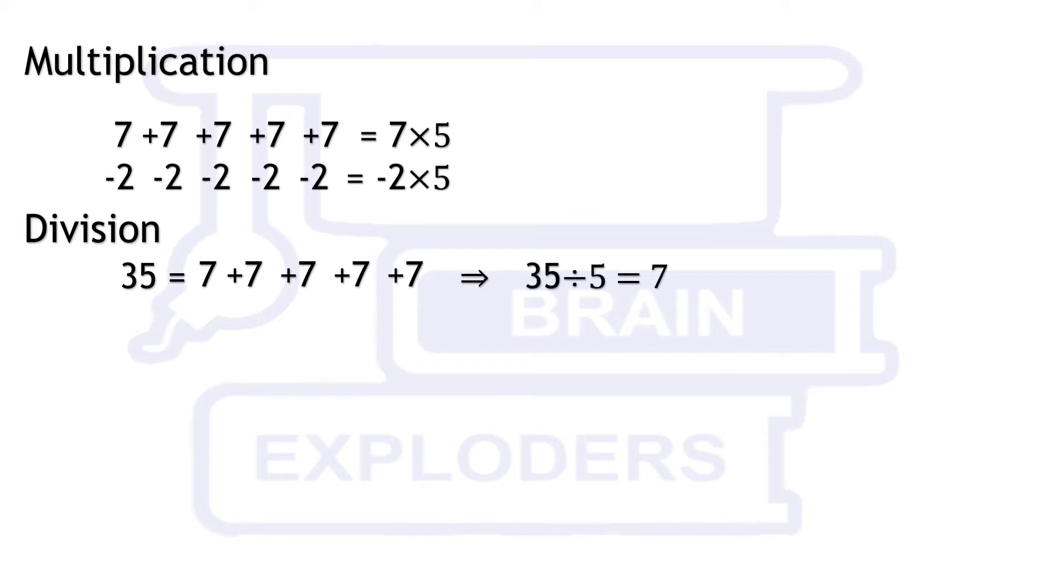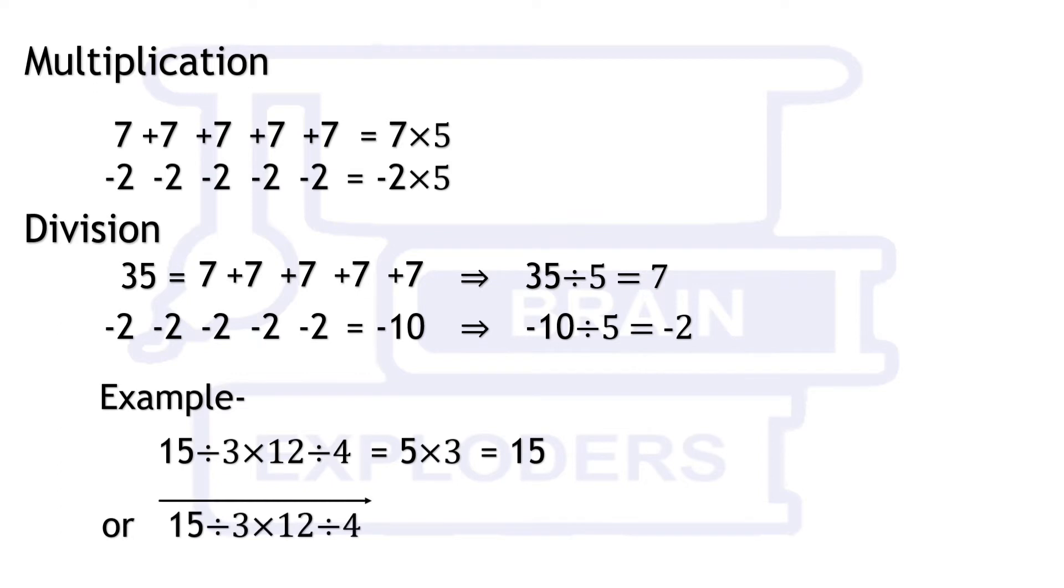In these operations, either division is performed first or just perform these operations left to right. The given example of 15 divided by 3 times 12 divided by 4 is solved in both ways.